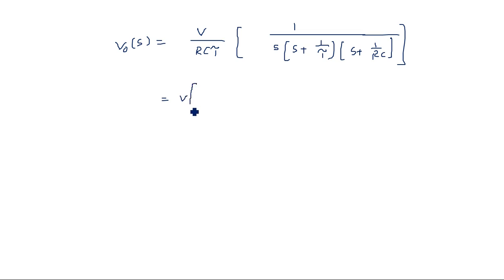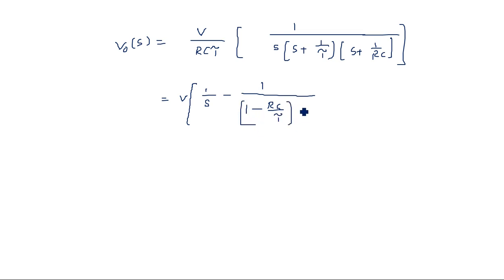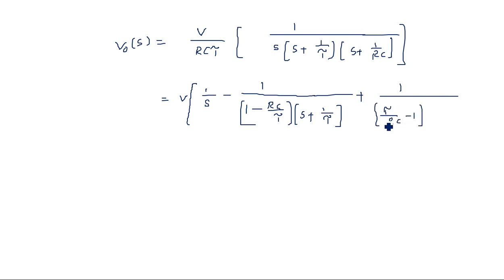Applying partial fractions, V_naught(s) expands as: V·[1/s minus 1/((1 minus RC/tau)·(s + 1/tau)) plus (1/tau)/((RC/tau minus 1)·(s + 1/RC))], corresponding to terms A/s + B/(s + 1/tau) + C/(s + 1/RC), with poles at s = 0, s = minus 1/tau, and s = minus 1/RC.